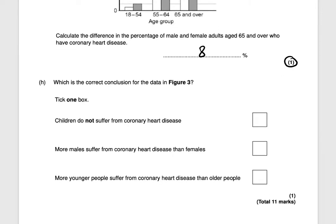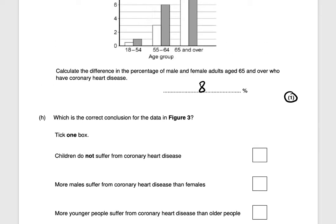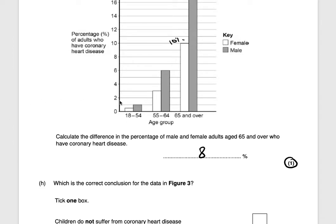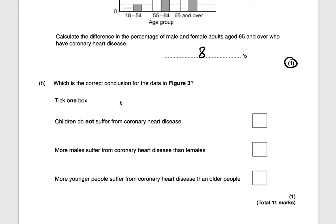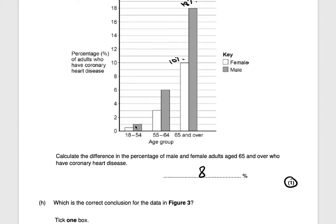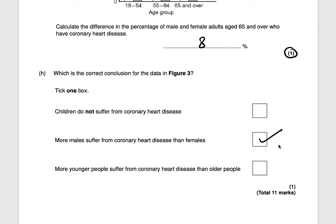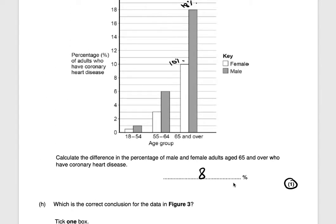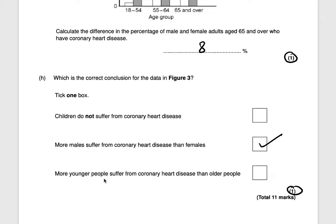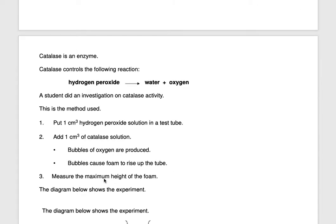Finally, which is the correct conclusion for the data in figure three? Children do not suffer from coronary heart disease — that's false, as the 18–54 group shows a small percentage do. The option that more males suffer from coronary heart disease than females is true, as the shaded bar is higher in every age group. More younger people suffering than older people is also false. So the correct conclusion is that more males suffer from coronary heart disease, for one mark.